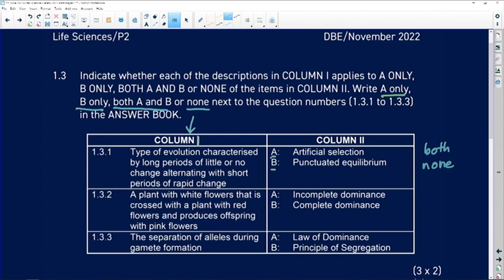So we write on our answer sheet 1.3.1 and we look at our statement: type of evolution characterized by long periods of little or no change alternating with short periods of rapid change. Is this artificial selection, punctuated equilibrium, both of them, or none?